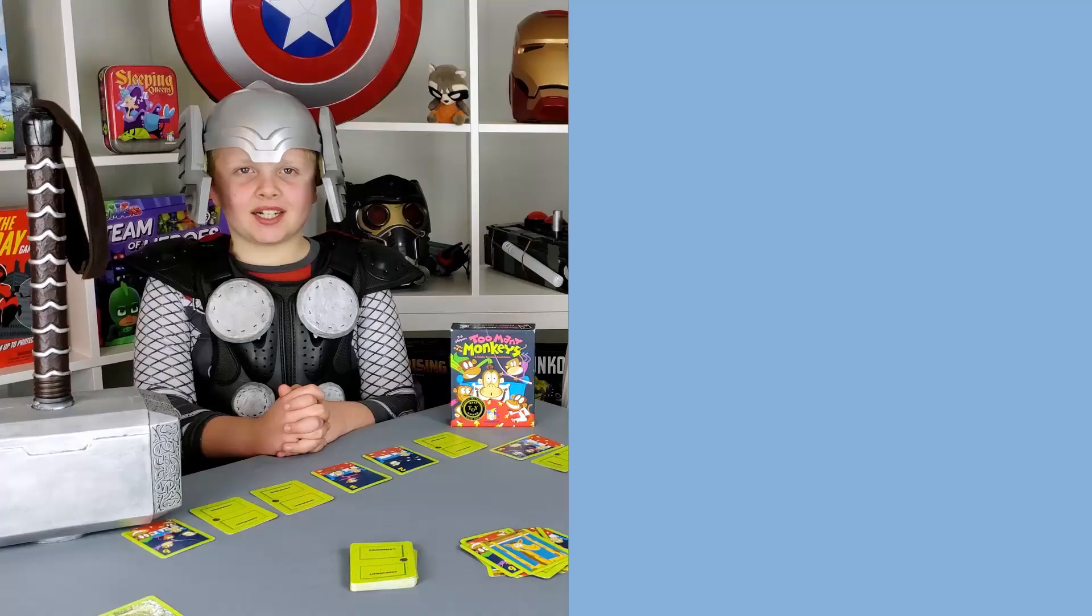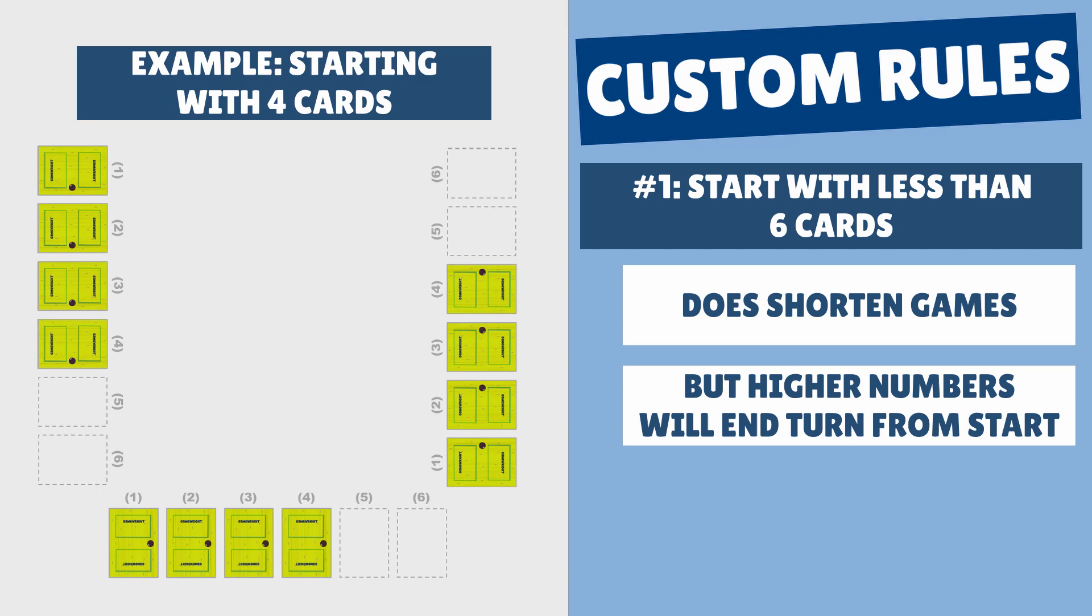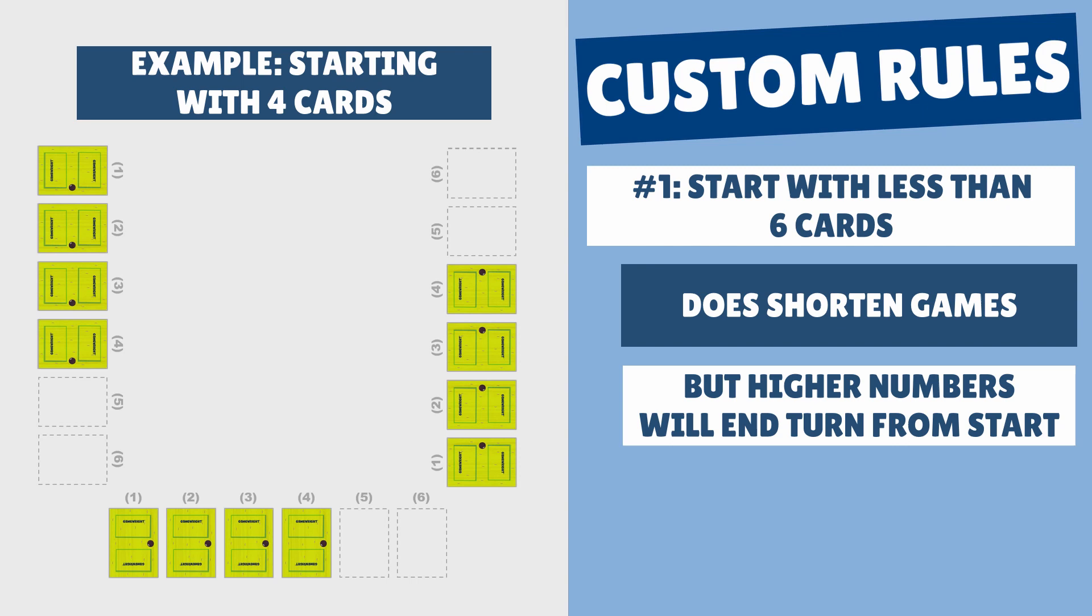At the start of the video, we promised to share our custom rules that make this game even more fun. Three of these are different ways to make the game shorter. The easiest way is to have everyone start with less than six cards. This does make the game shorter, but also means higher numbers will end your turn from the very start.